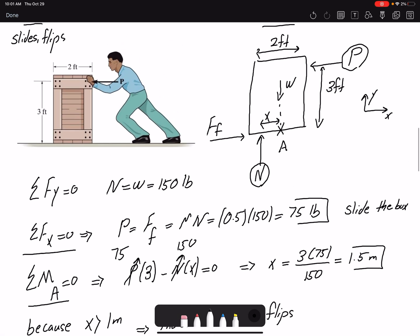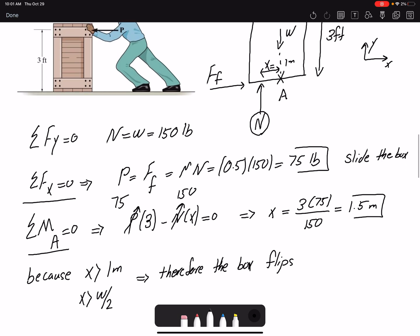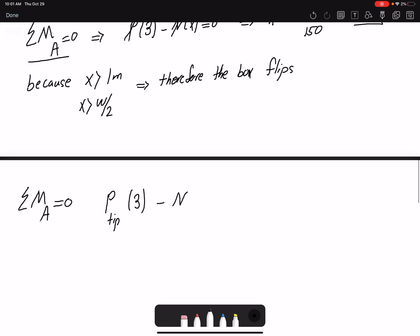We have the value of N, and then for x a maximum, to get the maximum resistance, x can be one meter. If this is two feet, x could be one meter max, so I have to put in one meter here equal zero. This is 150 pound, so I can find the force that it takes to tip the box, which would be 50 pound.